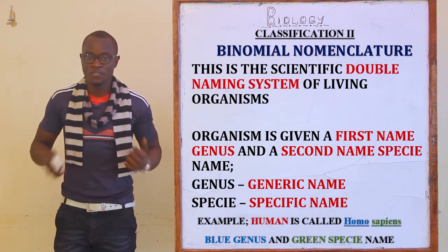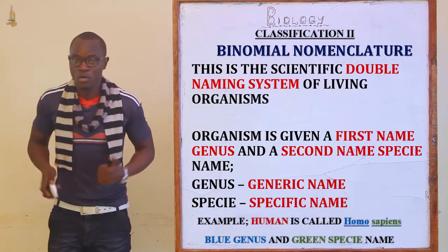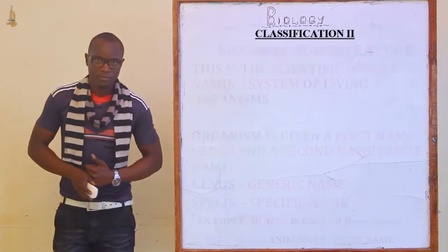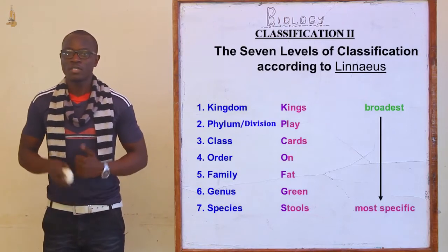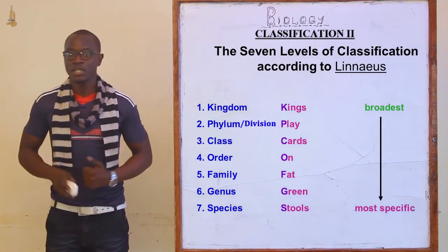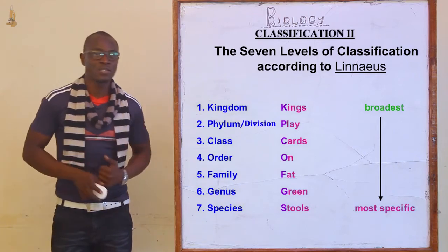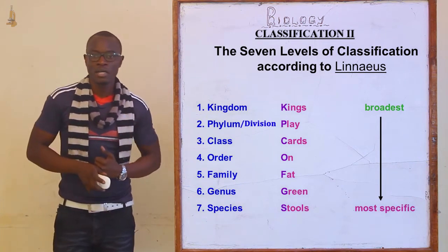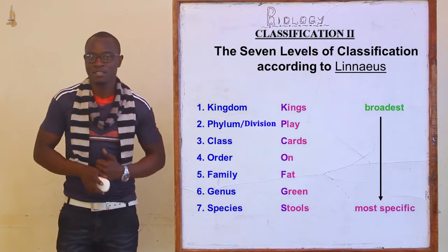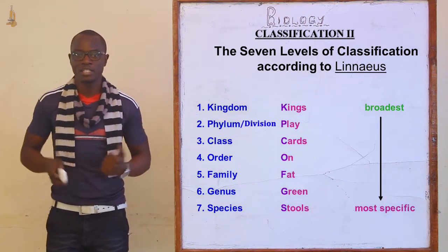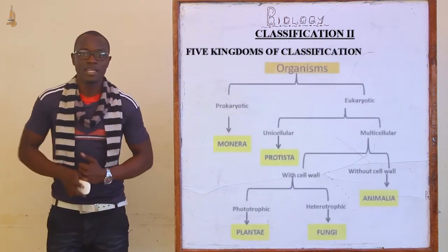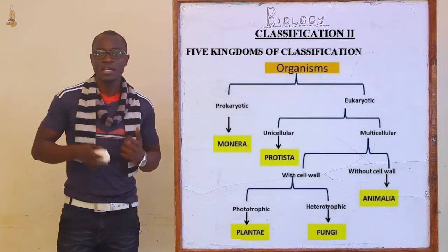In writing the scientific name, the rules of binomial nomenclature must apply. We also have seven taxonomic units of classification: kingdom, then phylum or division, then class, family, genus, and finally species.